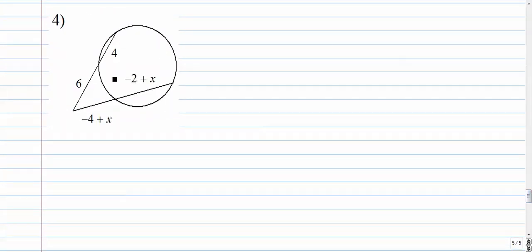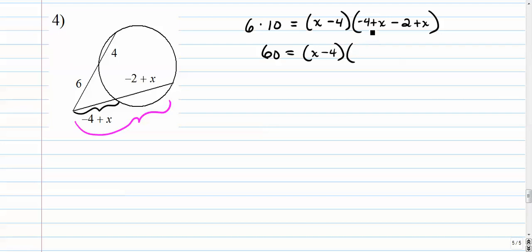Number four. Alright, here we go. Six times ten is equal to this segment. I'm going to write it like this. A little easier for me to see for some reason. Negative four plus x is the same as x minus four. Times the whole thing. The whole thing is negative four plus x plus negative two plus x. Alright, so this is 60 is equal to x minus four. And we've got to simplify this. x plus x is 2x minus six.